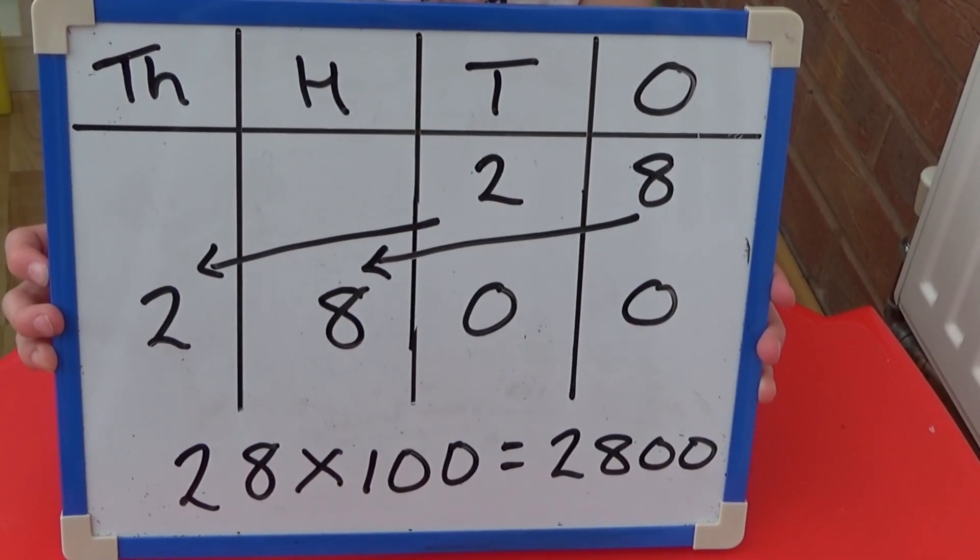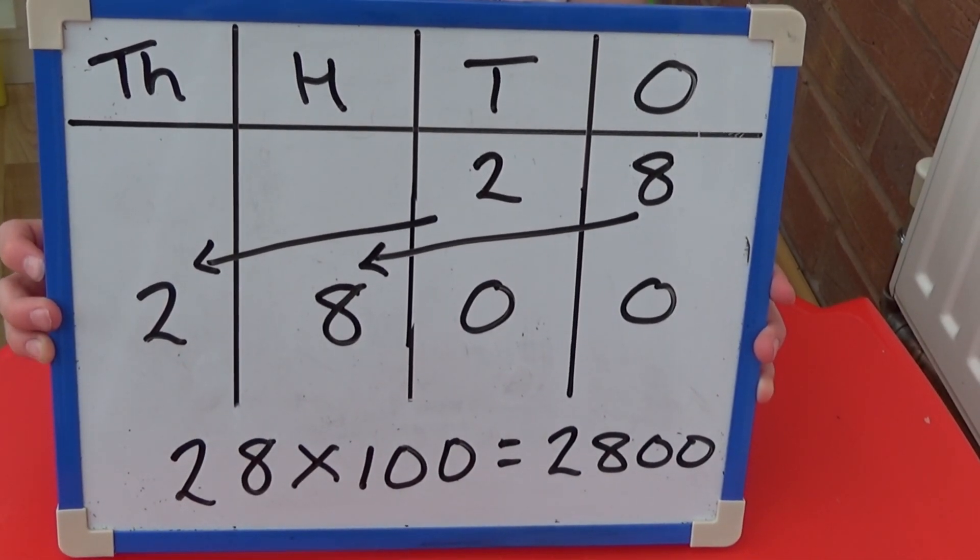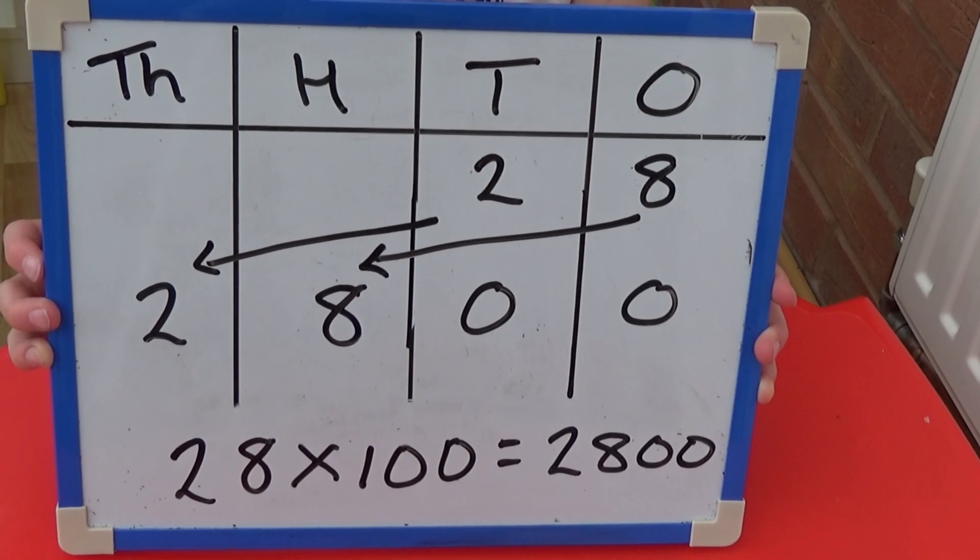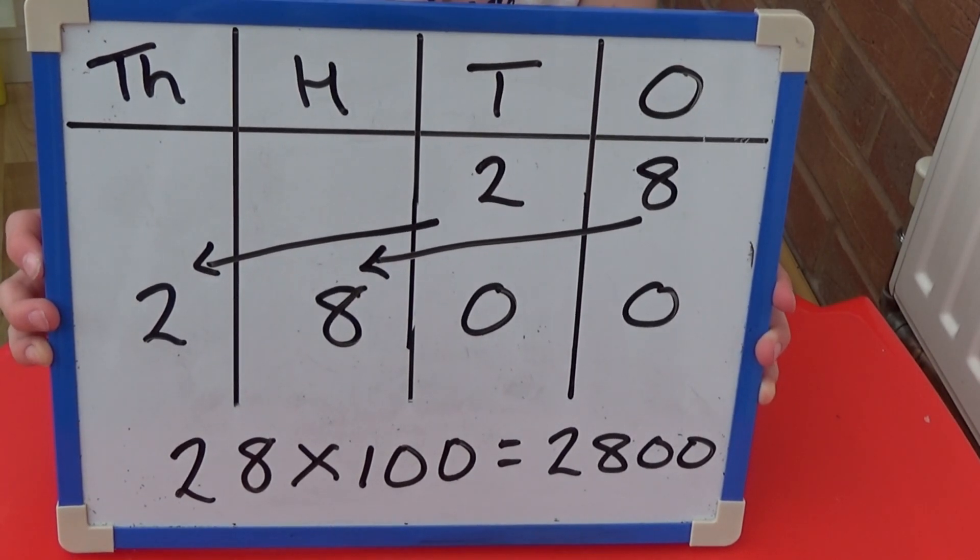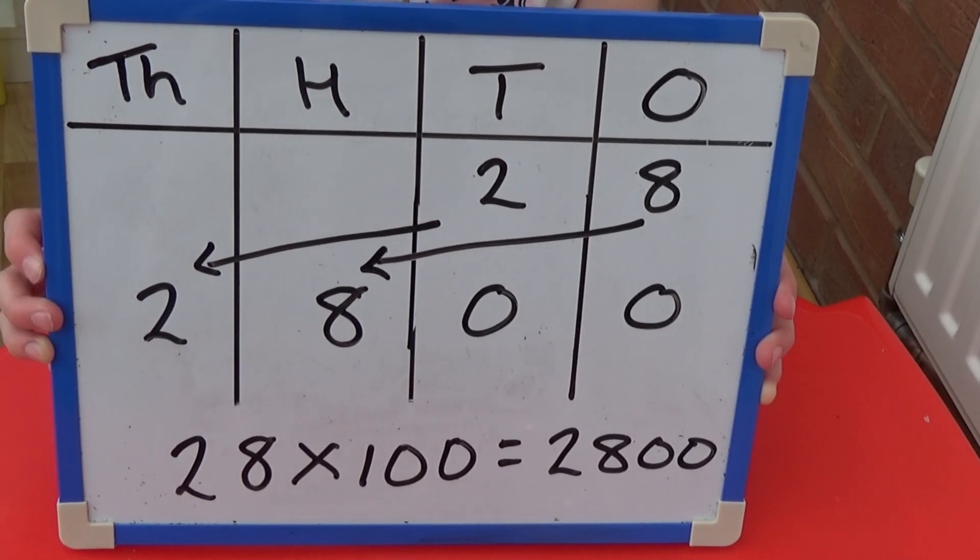For 28 times 100, each digit moves 2 columns to the left. So 20 becomes 2,000 and 8 becomes 800. And we need to add 0s to the 10s and 1s column. So 28 times 100 equals 2,800.